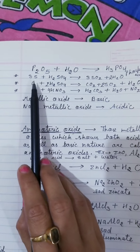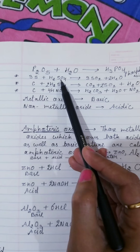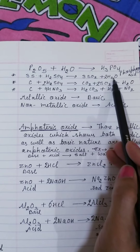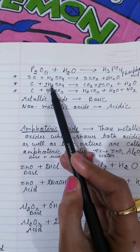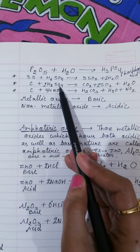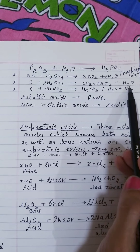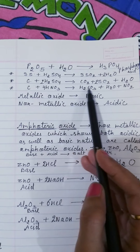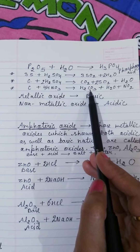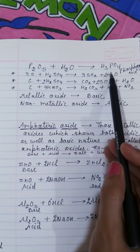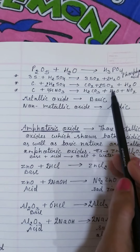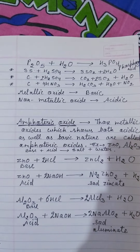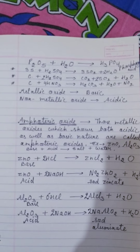Some other chemical properties: when non-metals react with sulfuric acid they form SO₂ and water. When carbon reacts with sulfuric acid it forms CO₂, SO₂, and water. When carbon reacts with nitric acid it forms carbonic acid, water, and NO₂. These are important reactions that can be asked to balance in the exam.